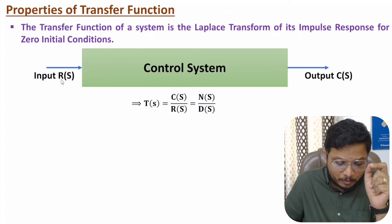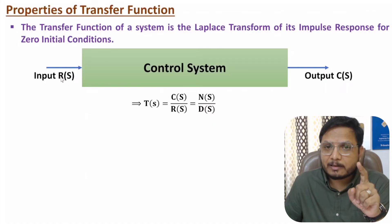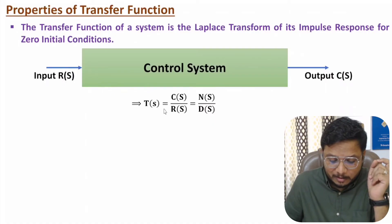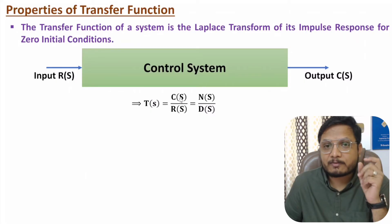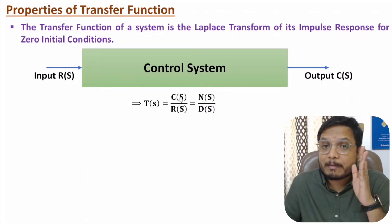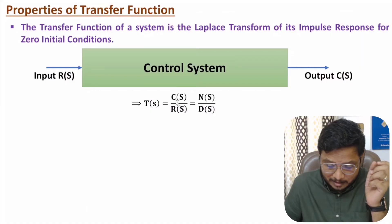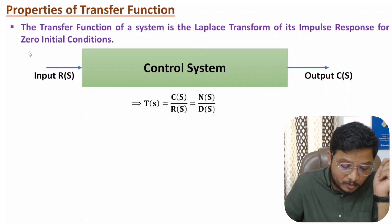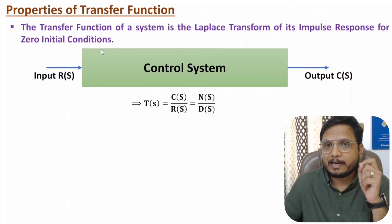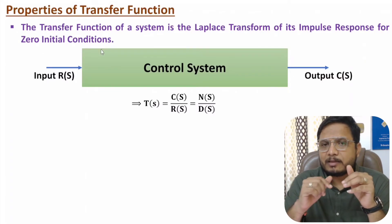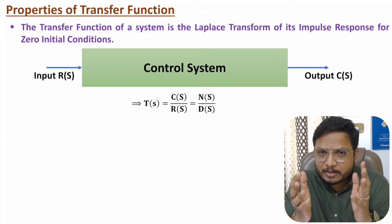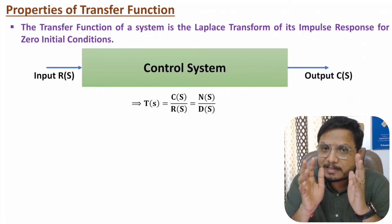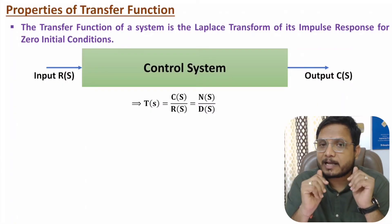If input R(s) is an impulse signal, in the Laplace domain an impulse signal equals one. So T(s) equals C(s), which means C(s) is the impulse response — provided we have zero initial conditions. For continuous time systems we use Laplace domain transfer function, while for discrete time systems we use the Z-transform.